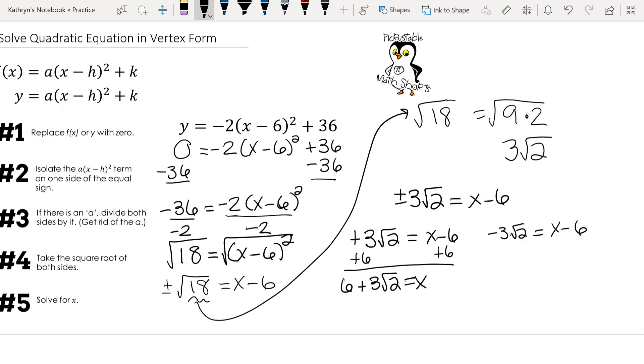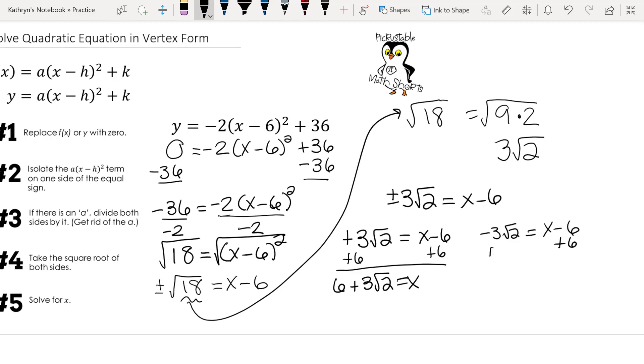And in the second one, once again, we're going to add 6 to both sides. And once again, I can't put these two together. I don't have a square root of 2 in both of them. So the answer here will be 6 minus 3 times the square root of 2 equals x.